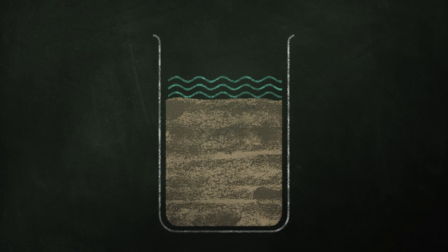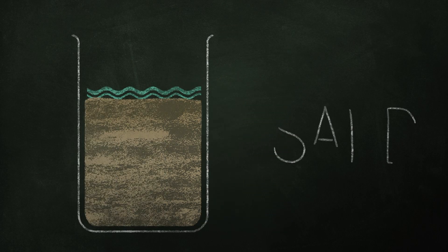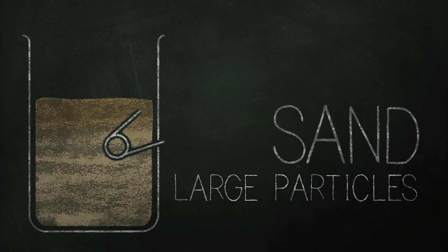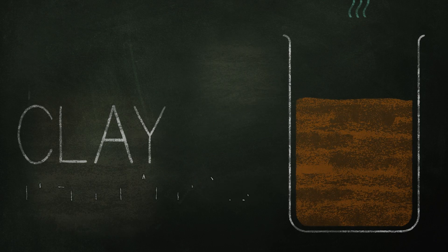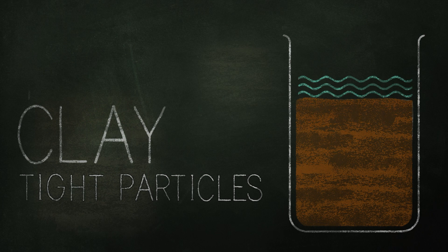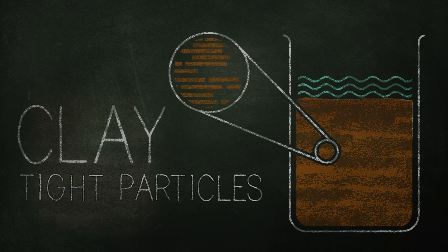Water flushes through the sand quickly because the particles are large, round, and have more space between them, while the flat, microscopic clay makes it difficult for the water to move through easily and floods the top of the container.